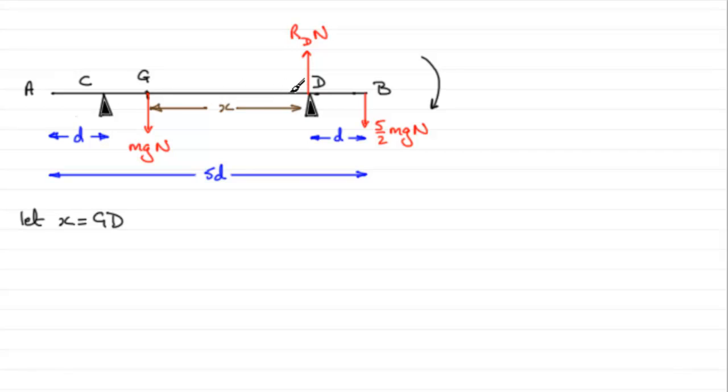So I said it's a typical moments question, and we need to take moments about the point D. I'm often asked how do you know which place to take moments about? Well in this equation, we don't want to involve RD - we don't know it - and by taking moments about D it won't enter the equation because it passes through this turning point.